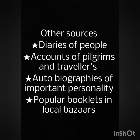Other than official sources, we have some extra sources too. The official sources show only the positive side of the British. Extra sources include diaries of people, accounts of pilgrims and travelers, autobiographies of important personalities like Mahatma Gandhi and Jawaharlal Nehru, and popular booklets from local bazaars. These are all helpful for knowing about our country and how people lived.